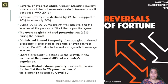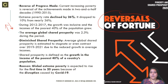The title of this report is 'Reversal of Fortune.' The current increase in poverty is a reversal of the achievements made over two and a half decades. What we achieved from 1990 to 2015 in poverty reduction has essentially been reversed.